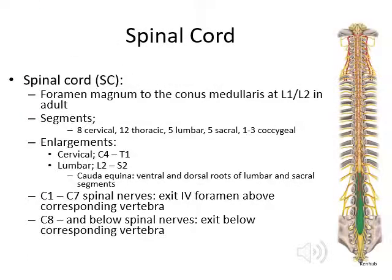The spinal cord begins at the foramen magnum and extends down to about L1-L2 in adults. It contains eight cervical segments, 12 thoracic, five lumbar, five sacral, and one to three coccygeal segments. Enlargements are at the cervical (C4–T1) and lumbar (L2–S2) levels. The cauda equina is formed by the ventral and dorsal roots of the lumbar and sacral segments. C1 through C7 nerve roots exit above the corresponding vertebrae; C8 and below exit below the corresponding vertebrae.